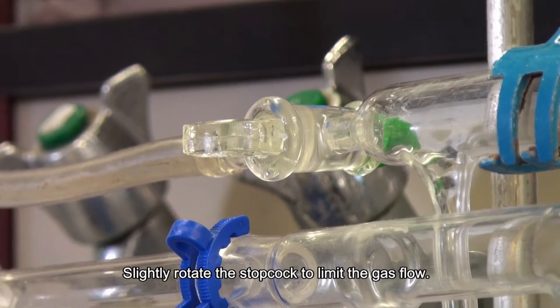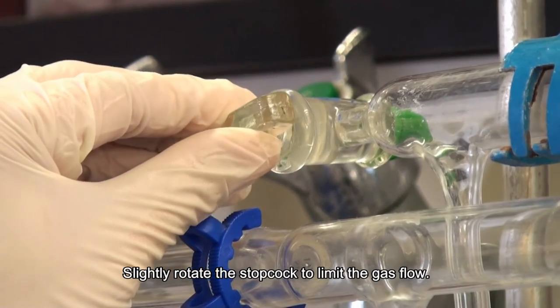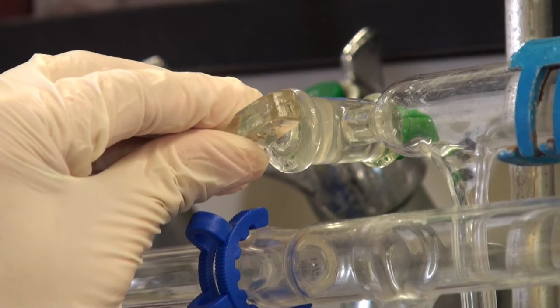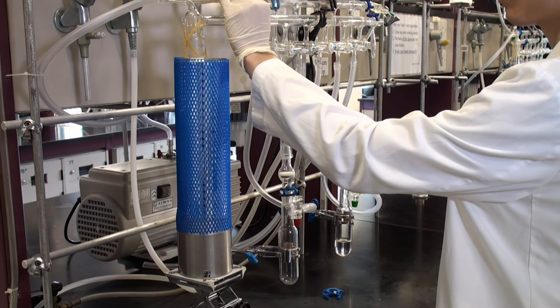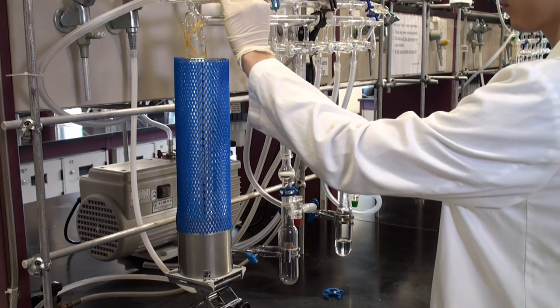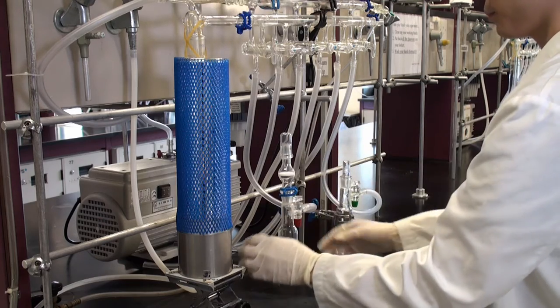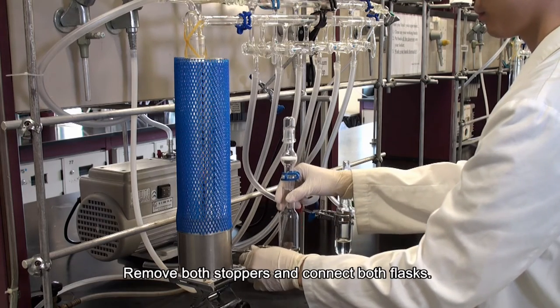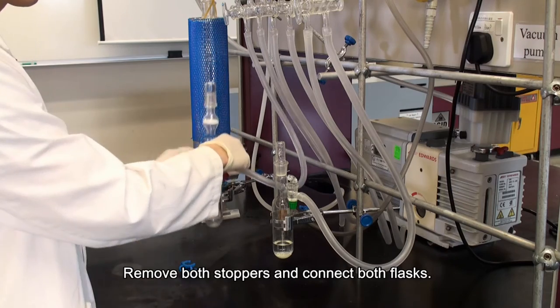Slightly rotate the stopcock, increase the gas flow to the Schlenk flask. Remove both stoppers and connect both flasks.